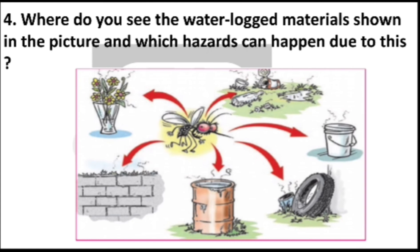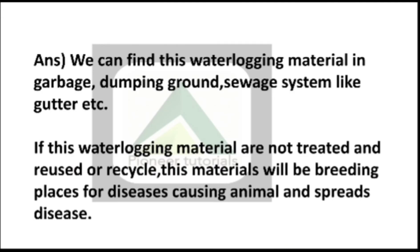Question number 4: Where do you see the water-locked material shown in the picture, and which hazard can happen due to this? We can see water-logged things such as used tires, baskets, plastic items, bottles, drums and unused substances. Water-logged materials can be found in garbage, dumping grounds, sewage systems like gutters, and even in houses. Water log means jismei paani zama hota hai. If these water-logging materials are not treated, reused or recycled, they become a breeding place for disease-causing animals and spread diseases.